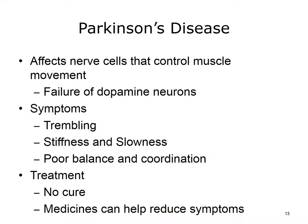Parkinson's disease is a disorder that affects nerve cells in a part of the brain that controls muscle movement. In Parkinson's, neurons that make a chemical called dopamine die or do not work properly. Dopamine normally sends signals that help coordinate movements. Symptoms include trembling of hands, arms, legs, jaw, and face, stiffness of the arms, legs, and trunk, slowness of movement, and poor balance and coordination. Parkinson's usually begins around age 60 and is more common in men than women. There is no cure, but a variety of medicines help reduce symptoms.